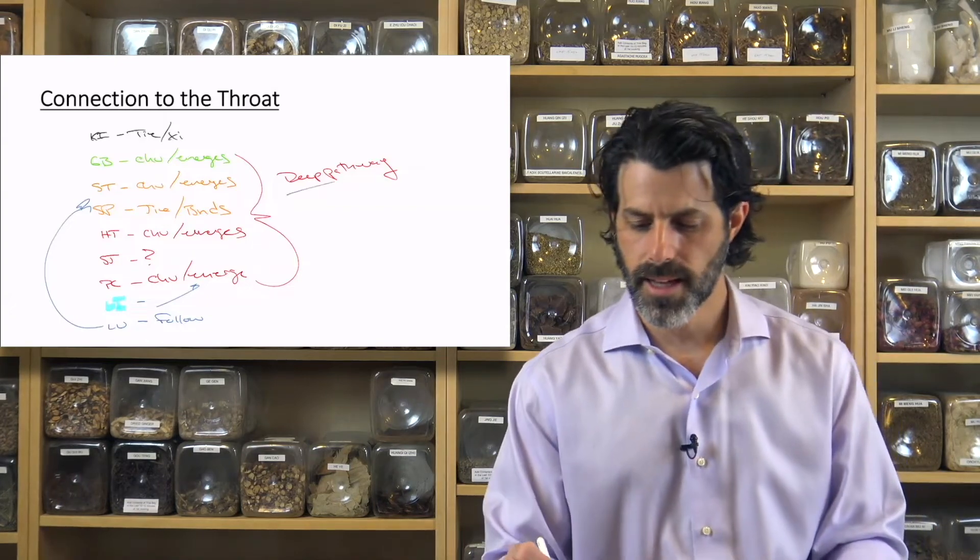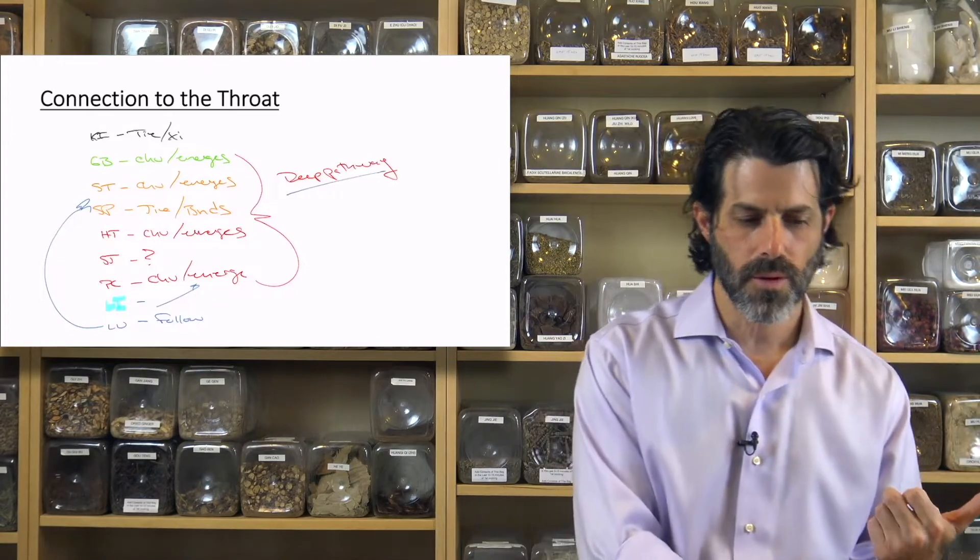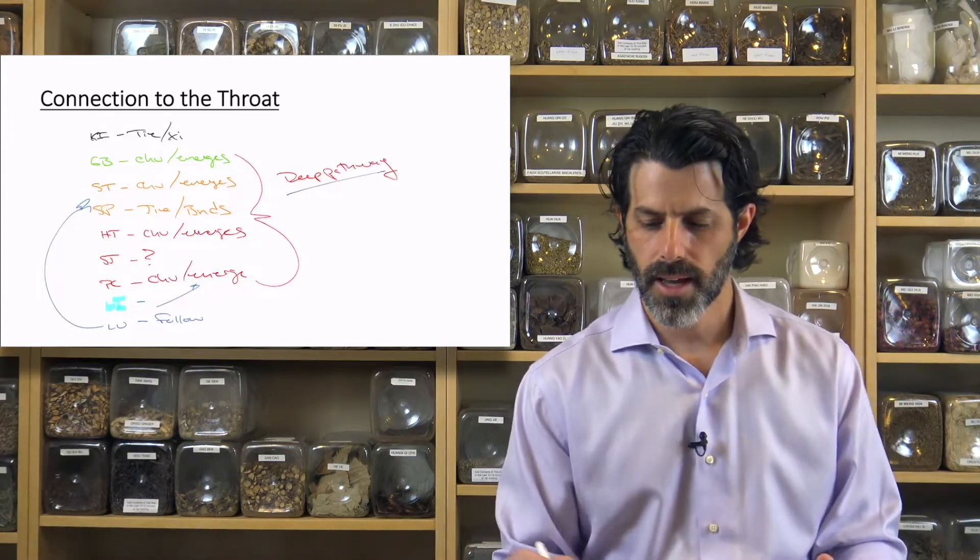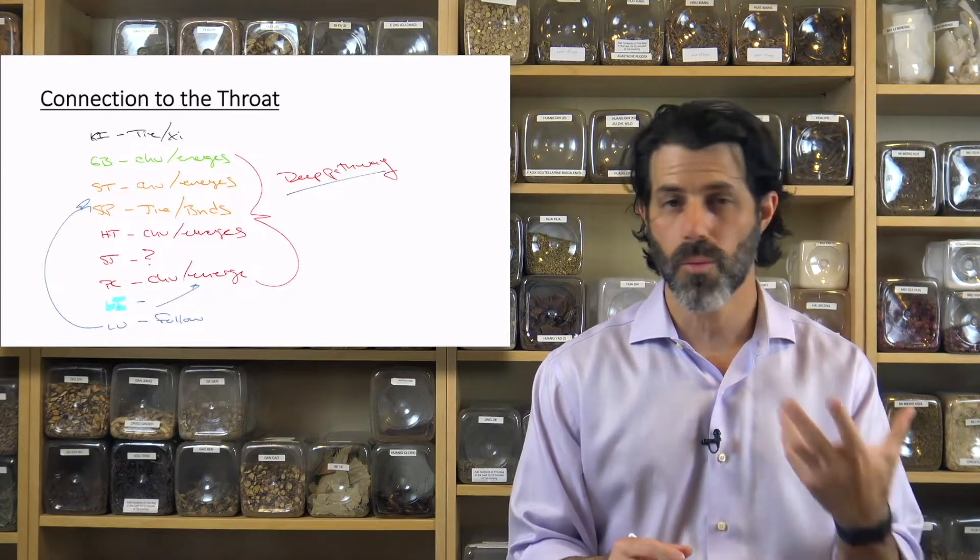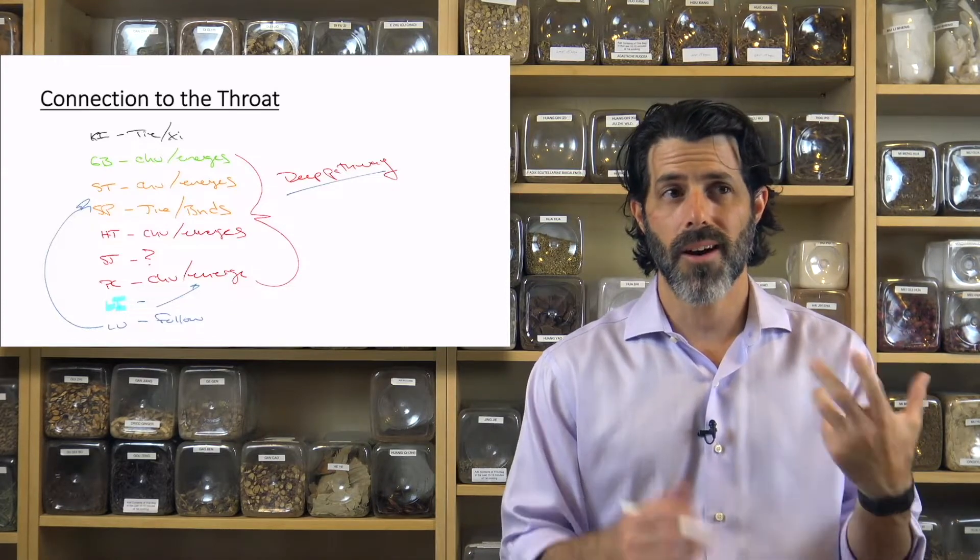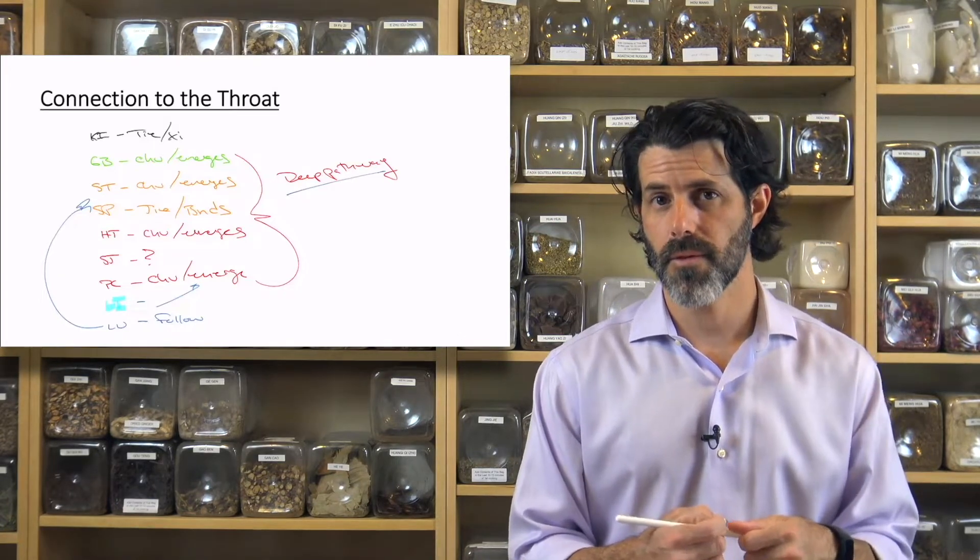The key thing here is the deep pathways. All of the diversion channels are moving through the throat through these deep pathways, all of them having a really significant connection back to that area where they are accessible to acupuncture at the level of throat. Very significant.